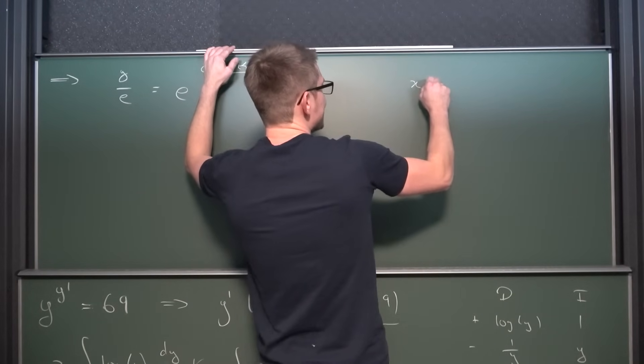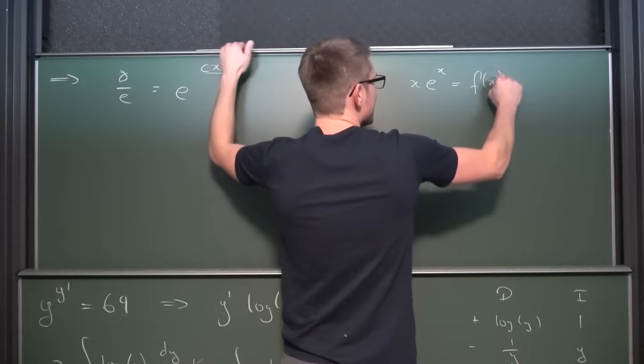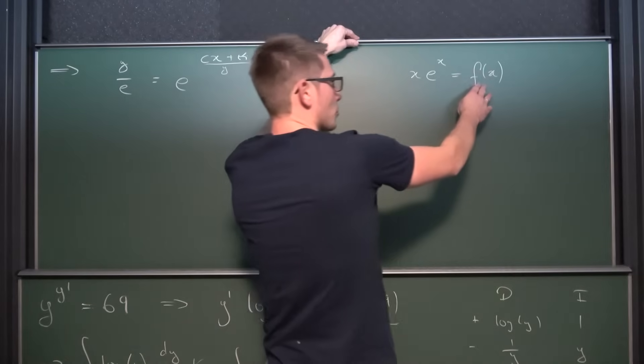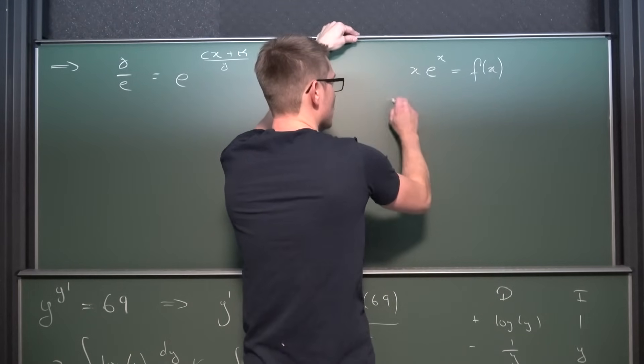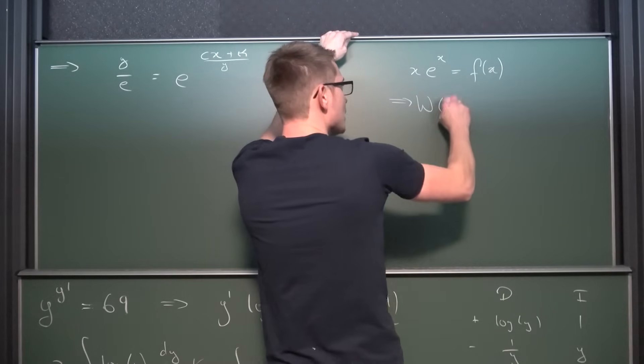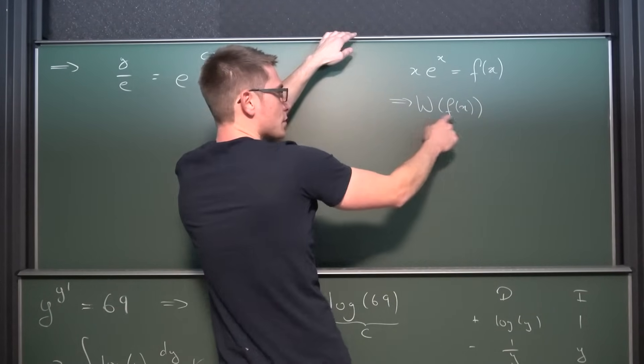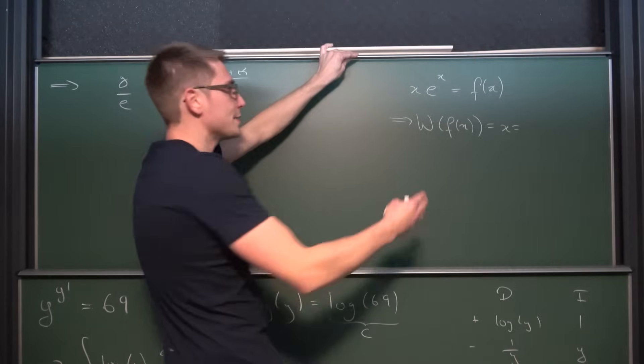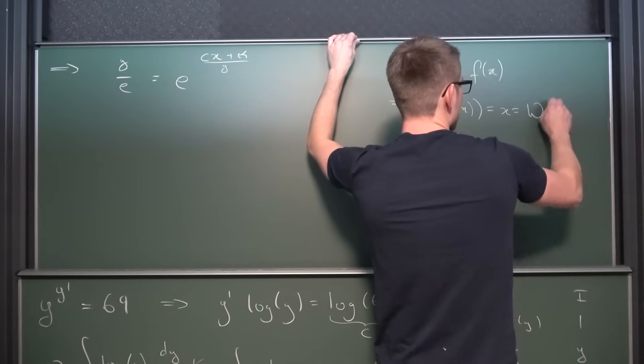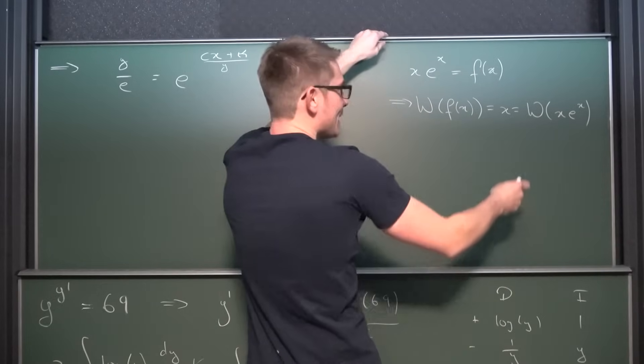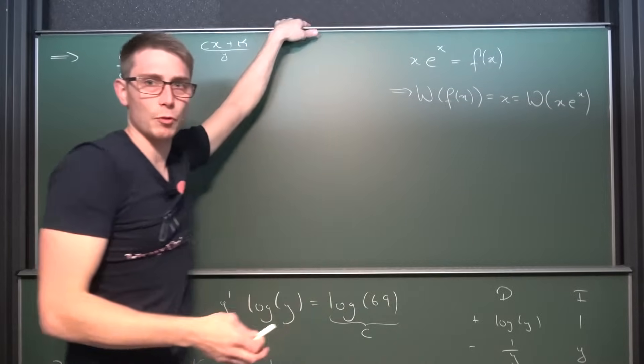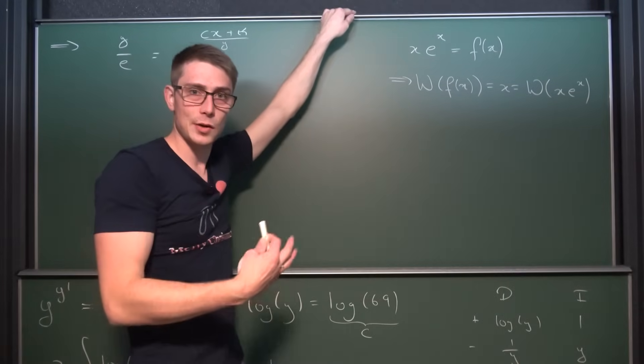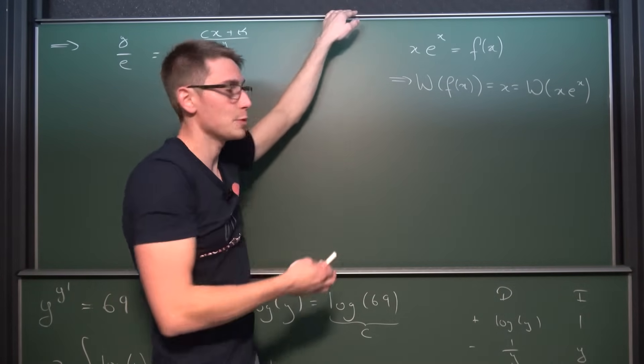So if we have a function x times e to the x and we call it f of x then the Lambert W function is the inverse function of that thing and if you apply the inverse function to a function you are gonna end up with the argument in and of itself. So if you apply the Lambert W function to the function f of x, inverse function of function is gonna result in just the argument x in and of itself and on the other side we are applying the inverse function too. So Lambert W of x times e to the x. And this thing right here is something that we are striving for.